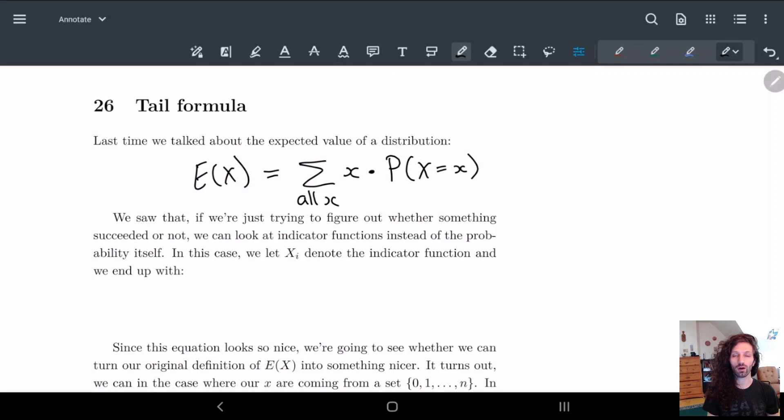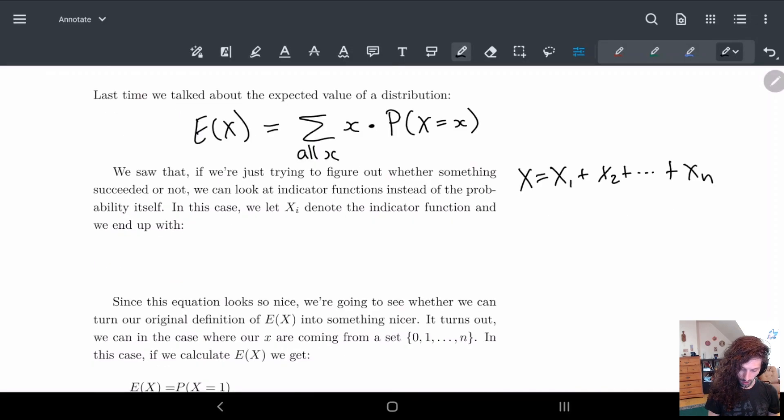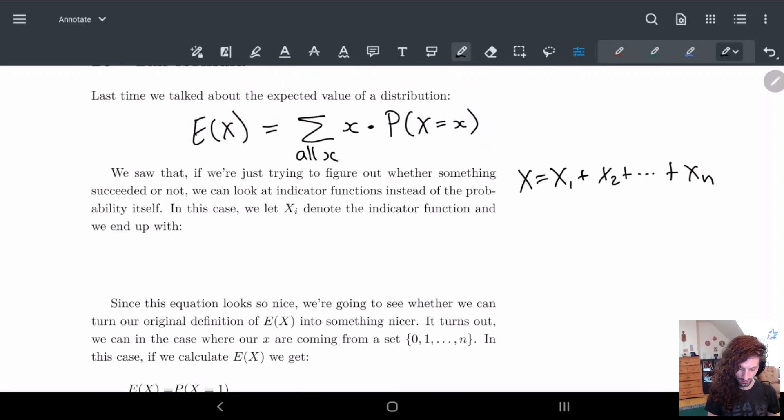Remember how if we can take our random variable X and make it a sum of multiple things, we let X_i denote the indicator function. They updated the app so it's gonna take me a second.